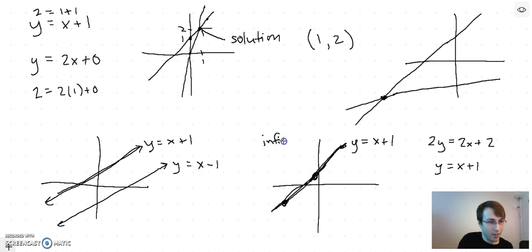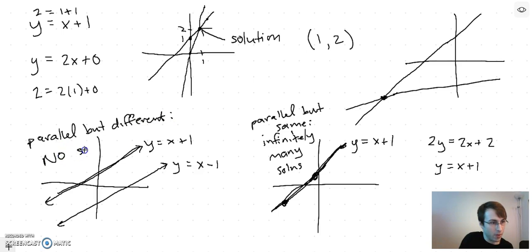So I'll just write down these categories. Same line: infinitely many solutions. Parallel but actually different: no solutions.